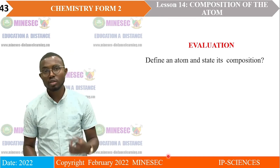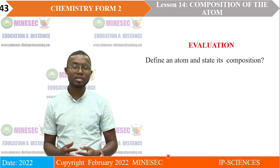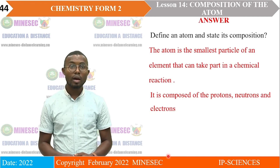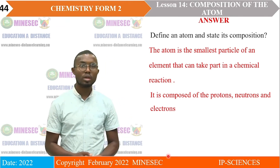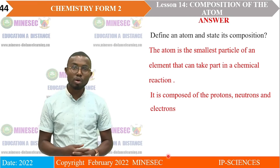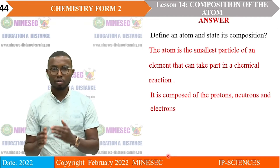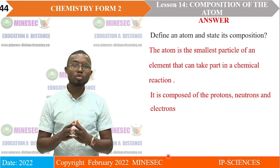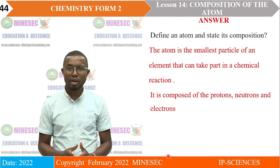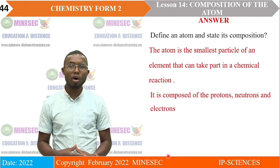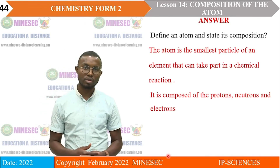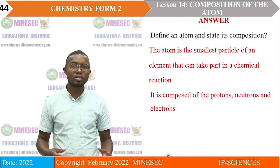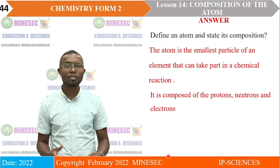Evaluation — let's answer this question together. Define an atom and state its composition. An atom is defined as the smallest particle of an element that can take part in a chemical reaction. It is composed of protons, neutrons, and electrons. The protons and neutrons are found in the nucleus and contribute to the mass of the atom. The electrons are found on the shells, are negatively charged, and have negligible mass.